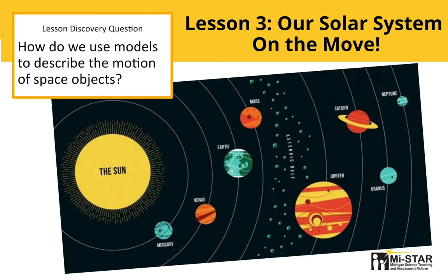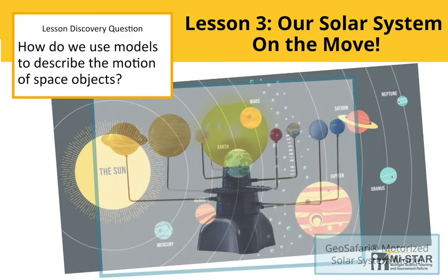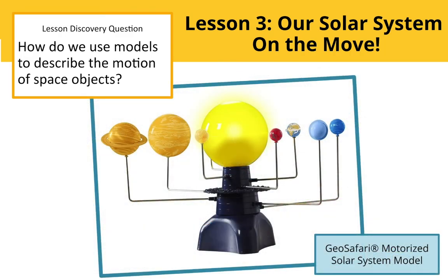In Lesson 3, students analyze a number of solar system models in order to discover that different models are useful for different purposes. Students also learn that scale and proportion are difficult to model accurately in solar system models. In the connect phase, students are provided with NASA's predicted motion path of the mystery object and determine that it is most likely an asteroid.